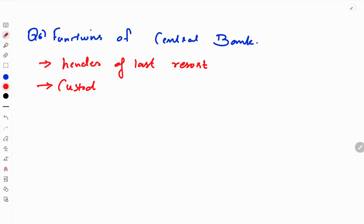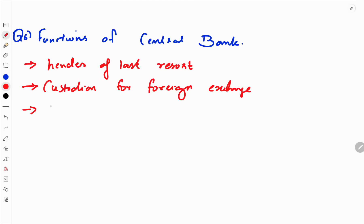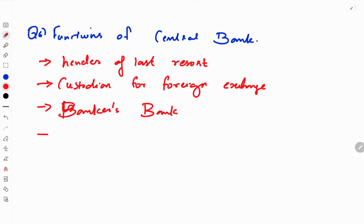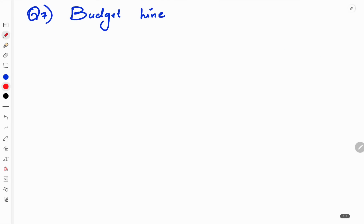Next question: functions of central bank. The custodian of foreign exchange is the central bank. It is the government's bank. The government has financial operations through the central bank. There is the issue of monetary policies. This is the controller of money supply. The central bank has the issue of currency.